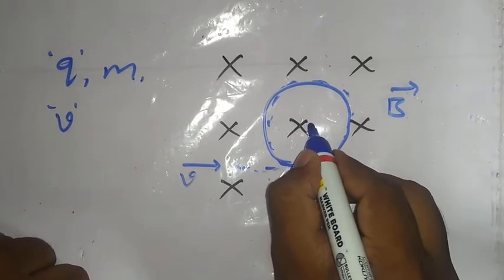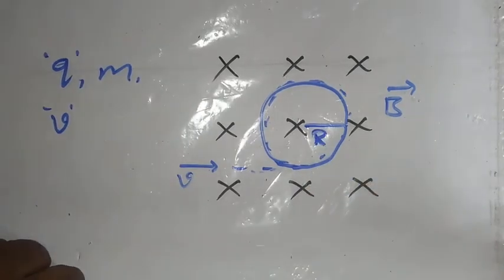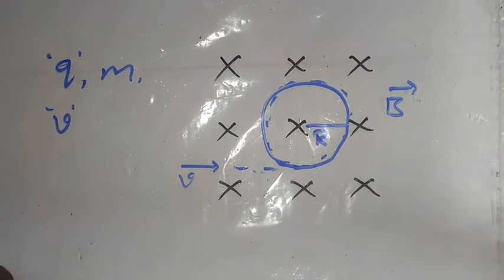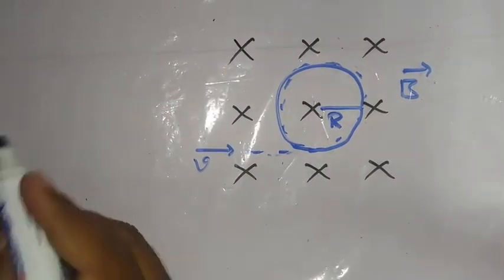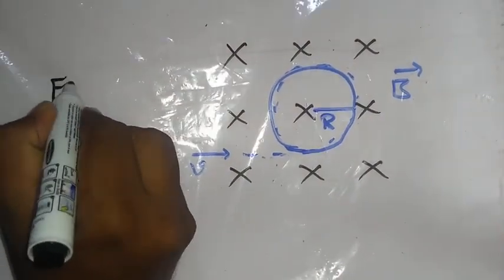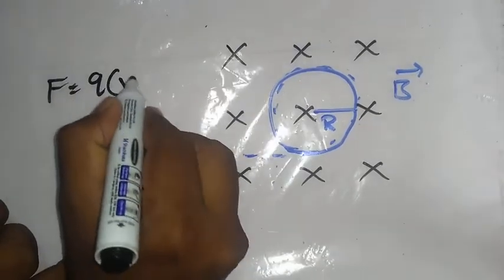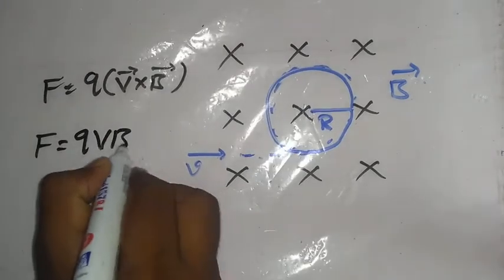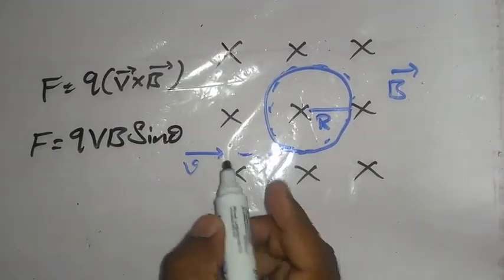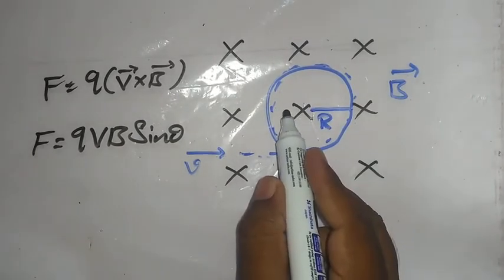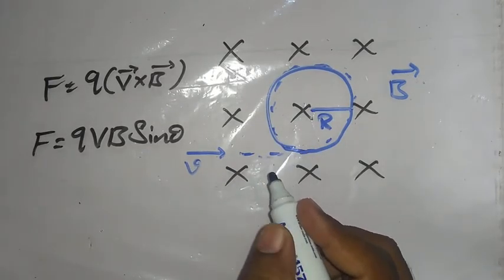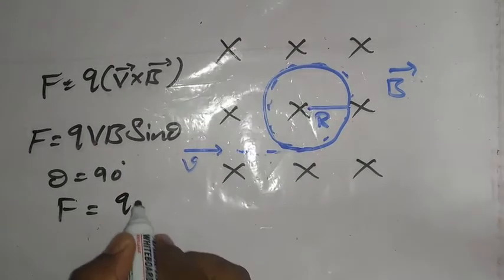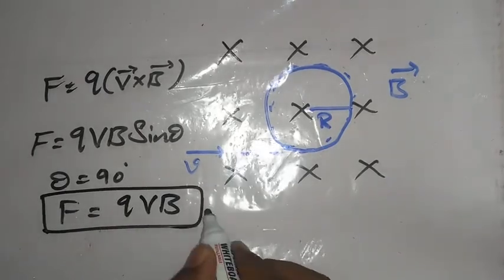Our aim is to find out the radius of the circular path which is traced by the charged particle. Let R be the radius of the circular path. The magnetic force acting on the charged particle is given by F = QV × B. Therefore, the magnitude of this force is QVB sinθ, where θ is the angle between the direction of velocity and magnetic field. Since θ = 90°, sin 90° = 1, so the force is F = QVB. This is taken as Equation 1.